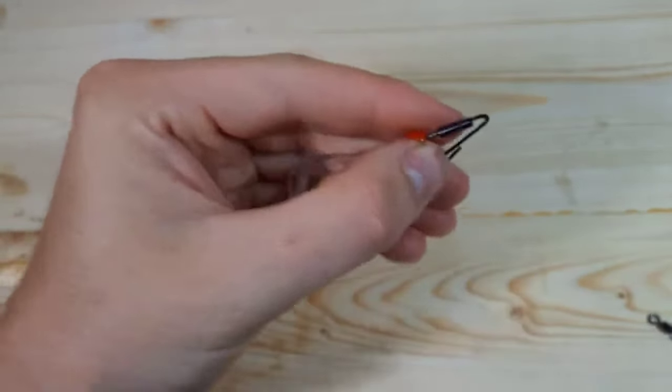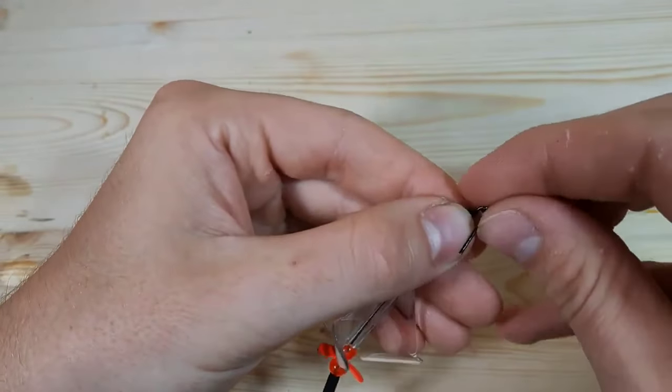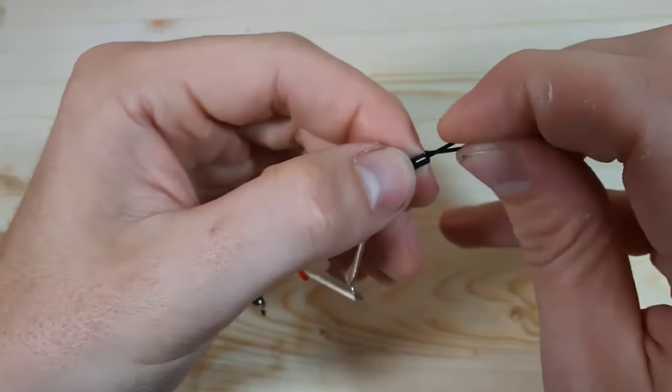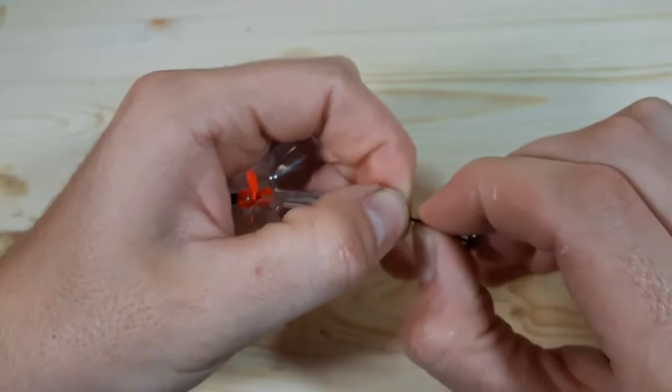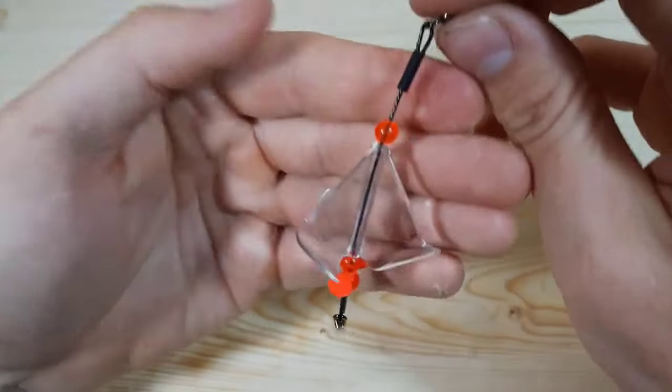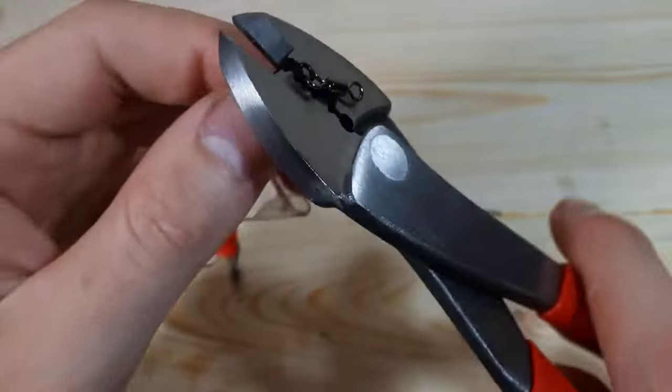Now we're going to feed on our second swivel and we can push our tag end into our crimp sleeve. Once you've done that you're good to go. Make sure you give it a little crimp there on the top and that's basically done.